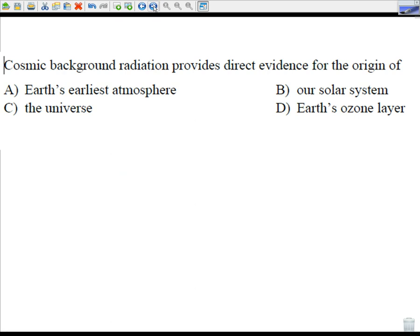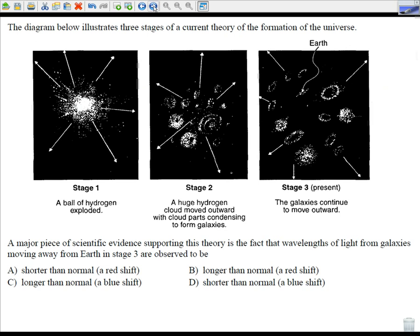Cosmic background radiation, that comes up quite often, provides direct evidence for the origin of - and what do you think? You could feel the tension, right? It would be the universe. Cosmic background radiation from the universe expanding from the Big Bang. Take a moment to read this one. A major piece of scientific evidence supporting this theory is the fact that wavelengths of light from galaxies moving away from Earth in stage 3 are observed to be - let's take a look. Let me show you where Earth is right over here. Stage 3, what would those wavelengths be doing? They would be longer than normal, which would be a redshift.